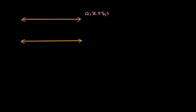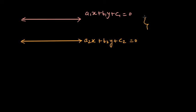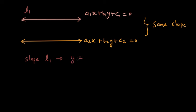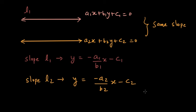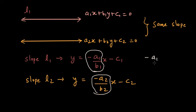Now let us consider two lines. The first line is a1x plus b1y plus c1 is equal to 0, and the other line is a2x plus b2y plus c2 is equal to 0. Now if these two lines are parallel, they will have the same slope. The slope of line 1 is found by isolating y, giving y equals minus a1 by b1 times x minus c1. Similarly for line 2, and we can see that both lines have the same slope, so minus a1 by b1 equals minus a2 by b2.